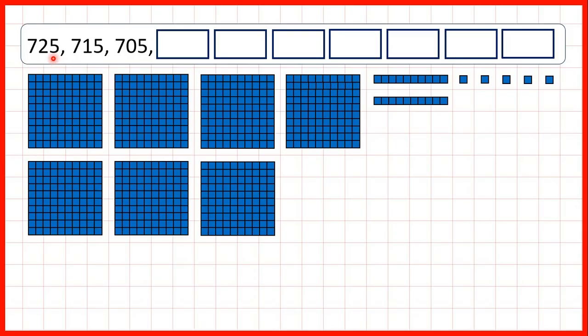Now, we need to count back in tens from a 3-digit number. So here we start with 725. That's 7 hundreds, 2 tens and 5 ones.